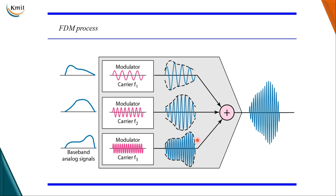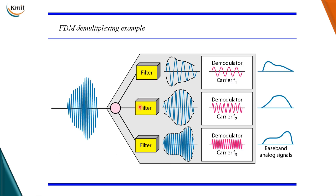During the multiplexing process, similar signals modulate different carrier frequencies — f1, f2, and f3. The resulting modulated signals are combined into a single composite signal that is sent over the link. At the demultiplexer, filters decompose the multiplexed composite signal into its constituent component signals, and then the demodulator separates them by their carrier frequencies and passes them to the output lines. This is how frequency division multiplexing takes place.